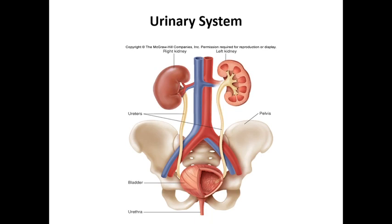First, what is the urinary system? If you look at this picture, you will see the human urinary system. It consists of two kidneys, two ureters that drain the urine from the kidneys into the urinary bladder, the urinary bladder where the urine is temporarily stored, and then the urethra through which the urine comes to the outside.